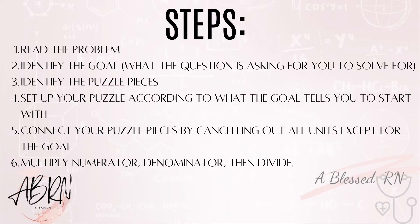So these are the steps. Step one is to read the problem. Then in step two, right after you read it, you identify the goal. The goal is the picture on the puzzle box — it is what the question is asking you to solve for. This is what we want our equations to look like once we get done setting up the equation. Step three is to identify the puzzle pieces. These are your conversions, your concentrations of your medicine, your ordered amount, your patient's weight. Anything that is together stays together — it belongs together on one puzzle piece.